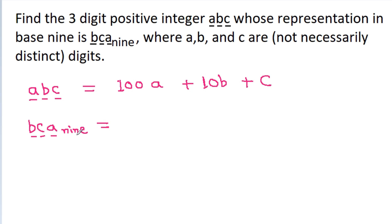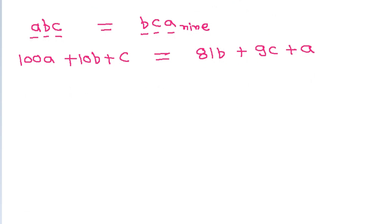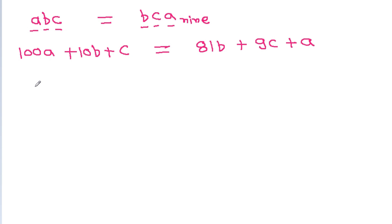According to the question, abc equals bca₉. So 100a + 10b + c equals 81b + 9c + a, and 100a minus a will be 99a equals 81b minus 10b, which is 71b, plus 9c minus c, which is 8c.